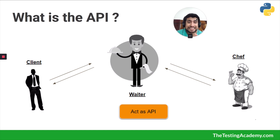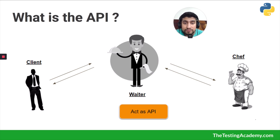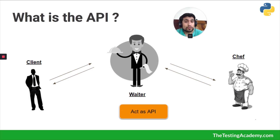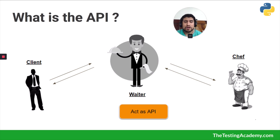If you try to communicate directly with the chef it can be a little confusing. The waiter understands both sides equally — the requirement of the client and what exactly the chef needs. So here the waiter is acting as the API, serving as the intermediary between the two parties.